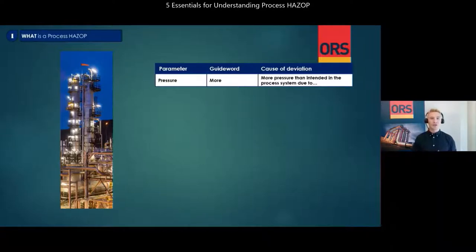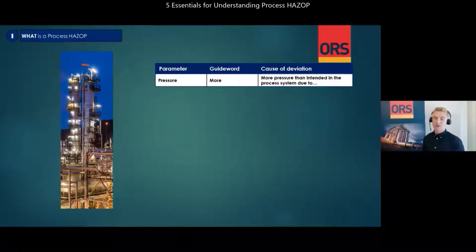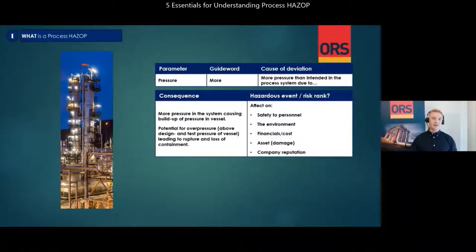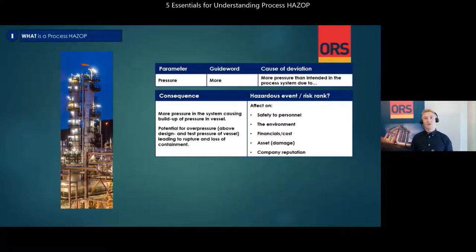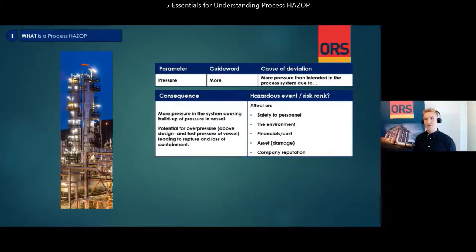If a cause for more pressure is identified, the consequence is defined excluding all existing safeguards. The level of detail of the consequence, such as quantification of what pressures one might experience, depends on three things: the requirements from the company, the time available in the workshop, and information available. Continuing on our example, we have the consequence: more pressure in the system causing buildup of pressure in vessel, potential for overpressure above the design and test pressure of the vessel, leading to rupture and loss of containment.